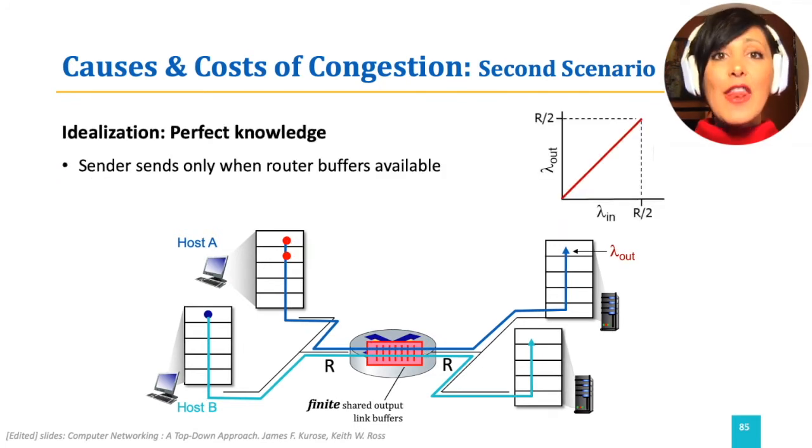Let's add another simplifying assumption to this analysis. Let's assume the senders have perfect knowledge about the router buffer state. Therefore, they can send data only when the router has buffer available. In this scenario, the knowledge about the router buffer will prevent losses at the router.